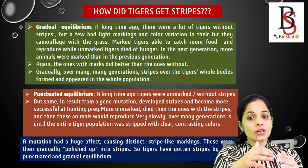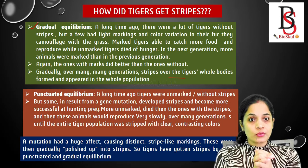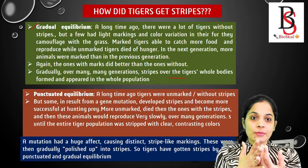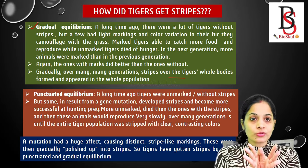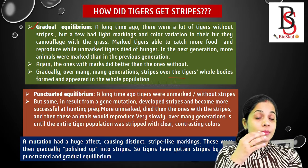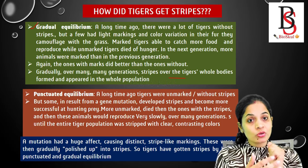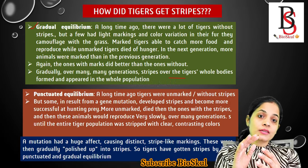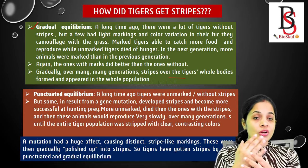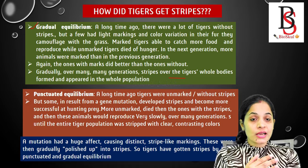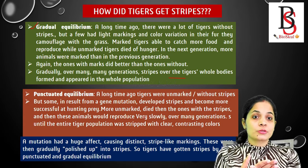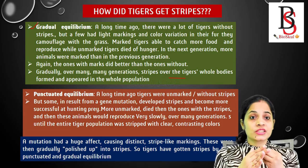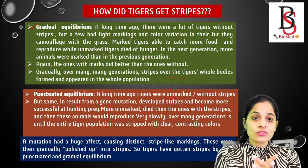Now let's discuss this through punctuated equilibrium. Initially, long ago, tigers were present without any stripes, but then a sudden mutation occurred that led to the formation of stripes over the whole body. Those tigers with stripes were more successful in reproduction and also had a greater lifespan than those without stripes.